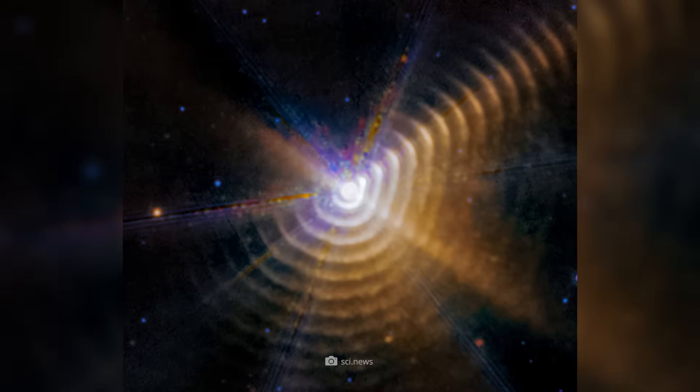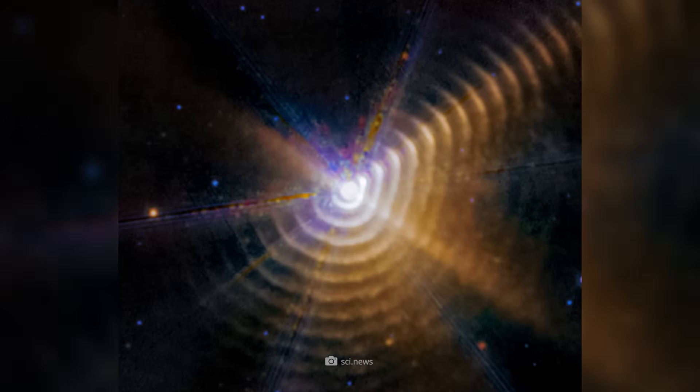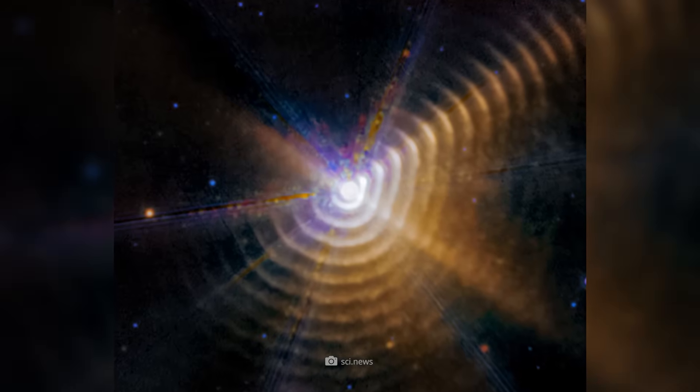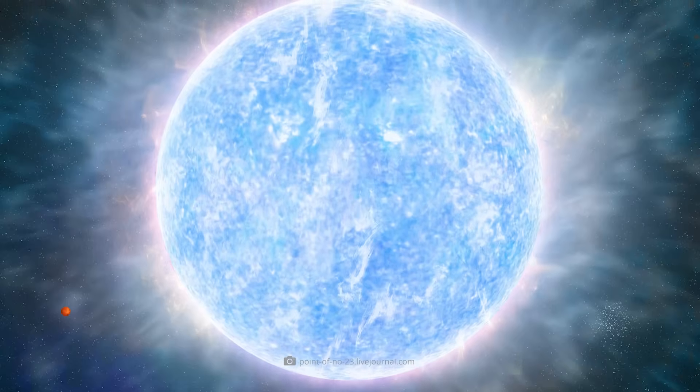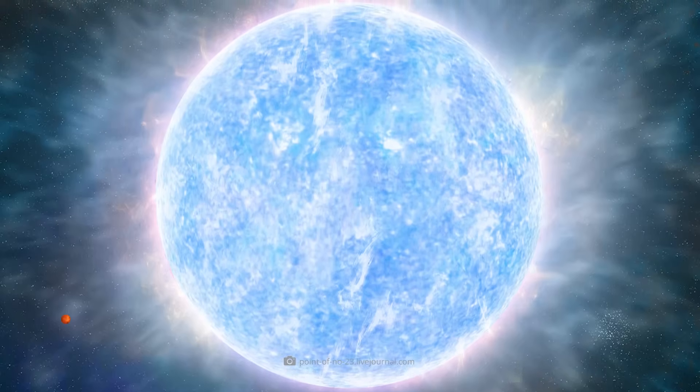In detail, we see the double star system WR140, which lies about 5,000 light years from Earth and contains a Wolf-Rayet star, a very special stellar outgrowth.